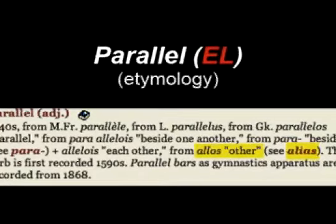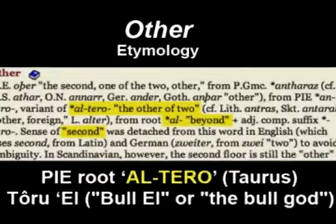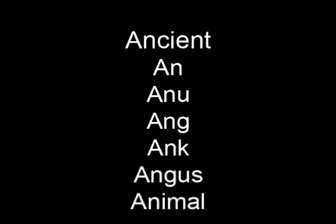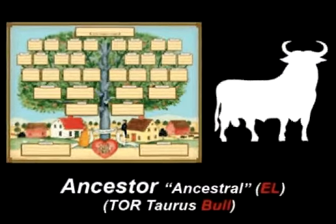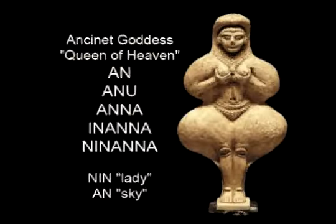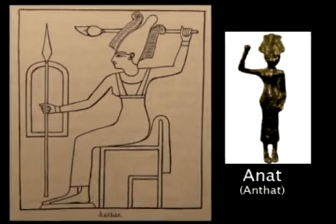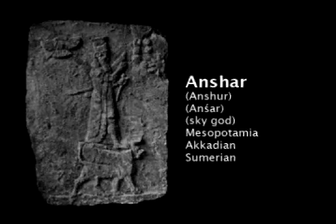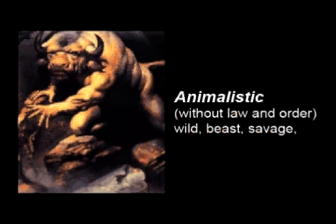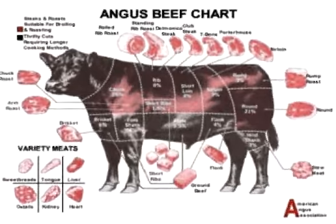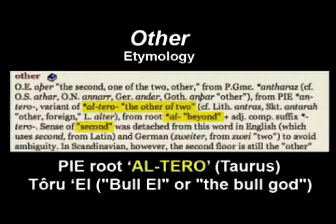So perhaps now you'll understand 'parallel' a little further. But let's take a look at the 'allos,' or the 'other.' When we look at the etymology of the word 'other,' it means the second one of the two, and from the PIE root 'ontero,' which gives us our 'an' words — like the very word 'ancient,' or 'ancestor,' which comes from Anu, the ancient, ancestral bull god. An and Anu, as well as many other An words, like Anna, or Inanna, as well as the word Ankh. An gives us the great Semitic, Ugaritic warrior goddess Anat, or Anthat. An gives us Anshar, the great sky god who rides atop of the bull. An gives us our modern-day words like 'animal' or 'animalistic.'